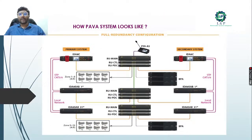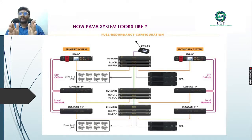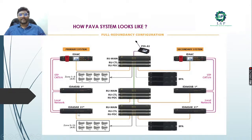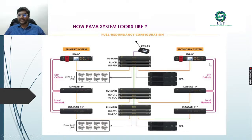Redundancy configuration is very important in modern systems. We have a main server, and from it two different systems control the entire master and slave network - a primary system and a secondary system. Both connect to the slaves through the local network and CAT6 cables. If the primary system fails, the secondary system takes charge and controls the entire building.